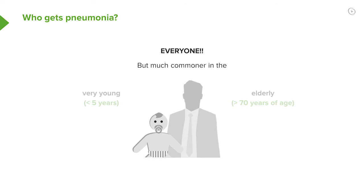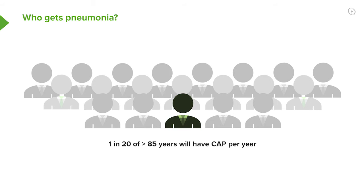So who gets pneumonia? Absolutely everybody could get pneumonia. It's not uncommon in young people, but it is particularly common in two age groups: the very young — under-fives, where it is the commonest cause of death across the developing world — and the elderly. There is an almost exponential increase in the chance of developing pneumonia after the age of 65, and the chance of developing pneumonia in somebody over 85 is about 5% a year.